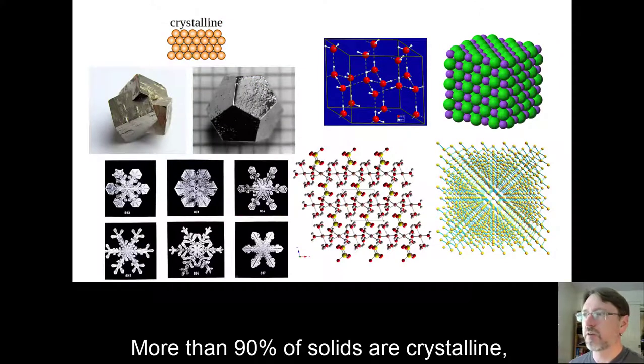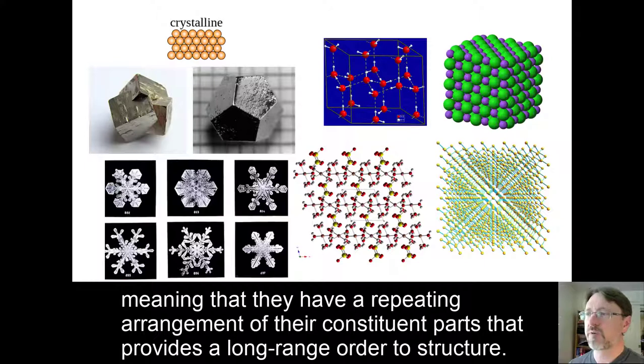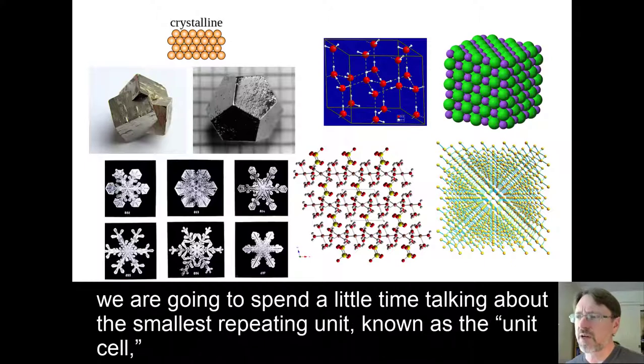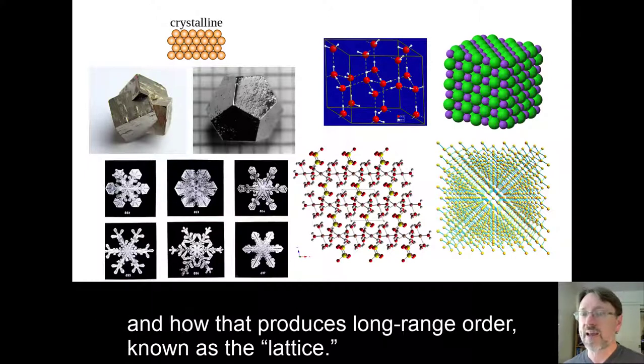More than 90% of solids are crystalline, meaning that they have a repeating arrangement of their constituent parts that provides long-range order to structure. Since the properties of a crystal can depend on the nature of this repeating arrangement, we're going to spend a little time talking about the smallest repeating unit, known as the unit cell, and how that produces long-range order, known as the lattice.